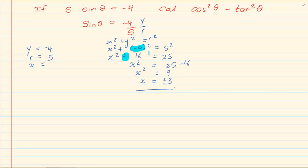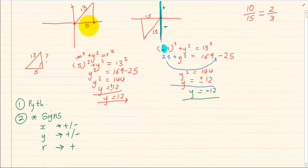x squared plus y squared gives us positive 16. So x is equal to plus or minus 3. This is where it becomes different from your normal Cartesian plane — from the Cartesian plane you can always see where the point lies, whether x is positive or negative.